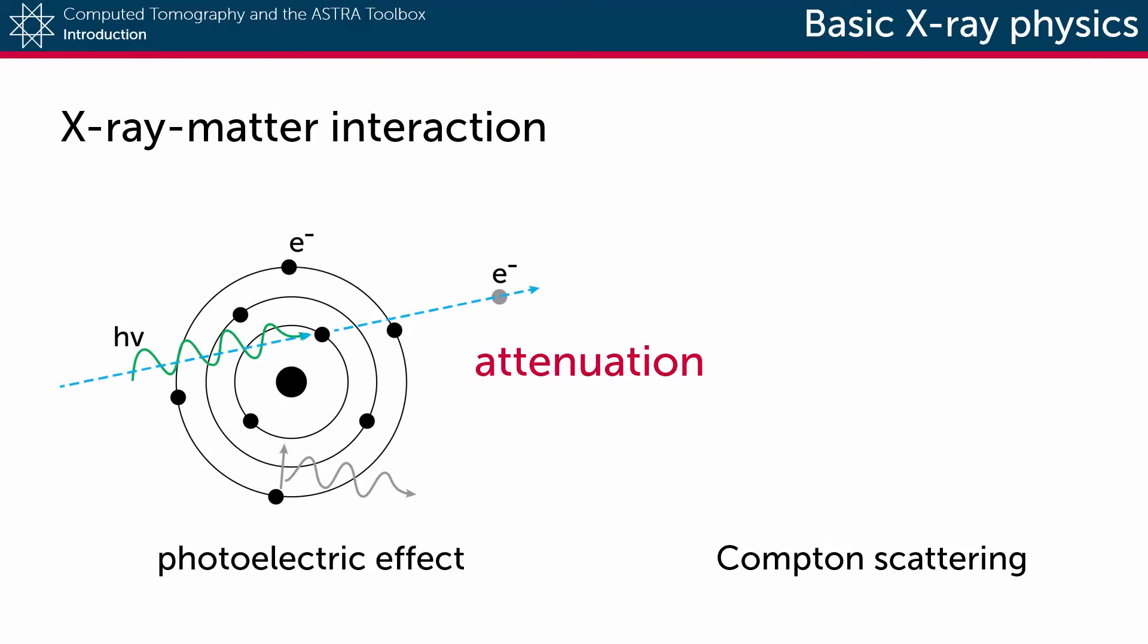In the photoelectric effect, the photon collides with an electron and is fully absorbed. If the electron is kicked out of the atom's orbit, then one electron from the outer shell will take its place, creating a new photon, but one that goes in a different direction.